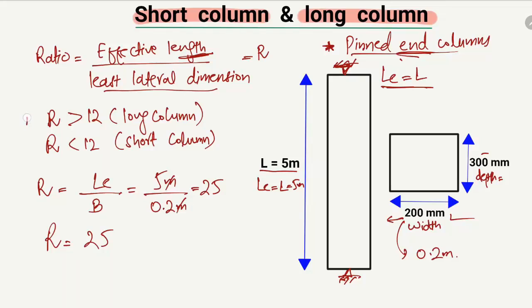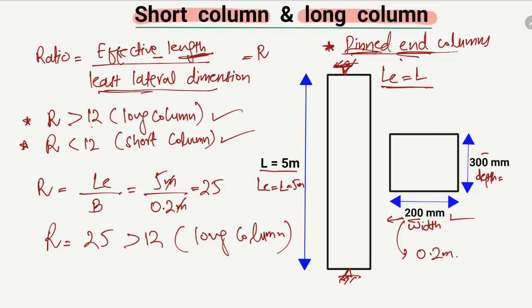Our ratio is 25, which is greater than 12. Applying the criteria: when r is greater than 12 it is a long column, and when it is less than 12 it is a short column. In our case r = 25, which is greater than 12, so our column with a length of 5 meters, pin-pin end conditions, and least lateral dimension of 200mm is classified as a long column. This is the main difference between short and long columns. Thank you for watching — don't forget to subscribe for more civil engineering videos.